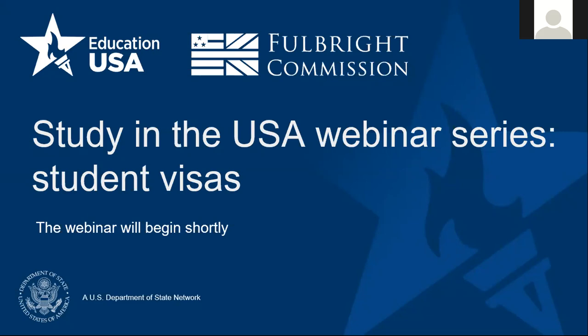Before we get started I'm going to say a little bit about the Fulbright Commission and EducationUSA services here. My name is Rowena, I'm one of the EducationUSA advisors for the United Kingdom, and we help students figure out how to study in the US. I got to study in California, and though you can probably tell from my accent I'm actually from the UK, it was the best thing I ever did and we're super excited to help you go and do this process too.